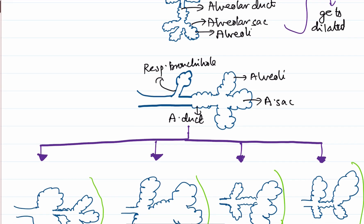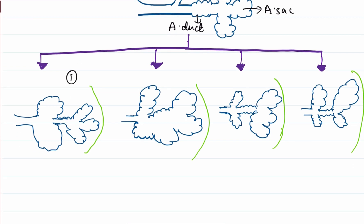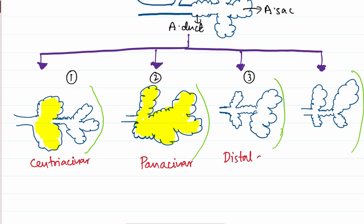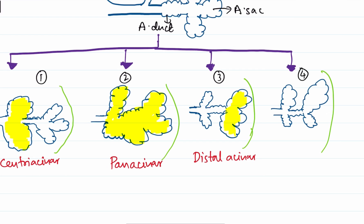Depending on anatomic distribution, emphysema is classified into four types. The first is centriacinar, where the central parts of the acinus are involved and the distal alveoli are not. The second is panacinar, where the whole of the distal acinus is dilated. The third is distal acinar, where the alveolar sacs and individual alveoli are more dilated. The fourth is irregular emphysema, where involvement is irregular.